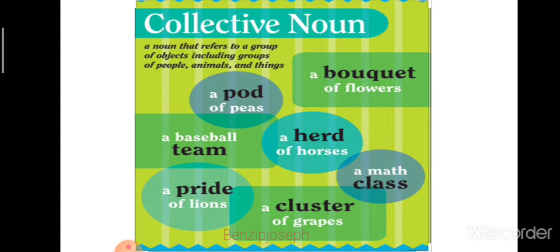Examples of collective nouns: a bokeh of lass, a pond of bees, a baseball team, a herd of horse, a math of class, a cluster of grapes, a pride of lion.